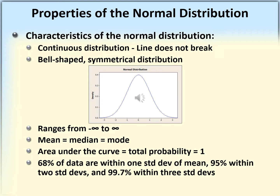For the normal distribution, mean equals median equals mode, and the area under the curve equals the total probability, which equals one.